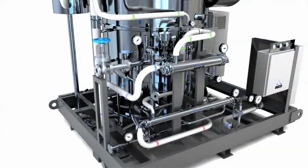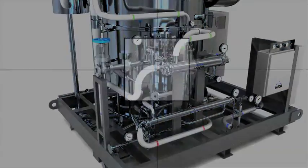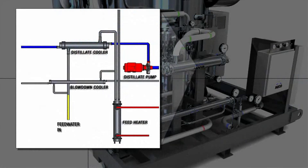The process begins when feed water is preheated by the distillate cooler and blow-down cooler, as well as the feed heater. This efficient heat exchange in the coolers minimizes the system's energy consumption by reducing demand on the feed heater.